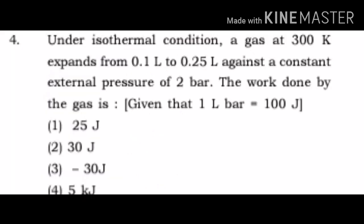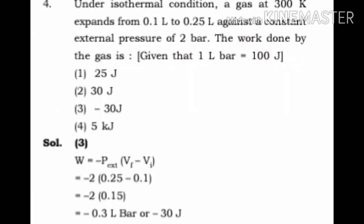Fourth question: under isothermal condition, a gas at 300 kelvin expands from 0.1 liter to 0.25 liter against a constant external pressure of 2 bar. The work done by gas is, given that 1 liter bar equals 100 joule: 1) 25 joule, 2) 30 joule, 3) minus 30 joule, 4) 5 kilojoule.